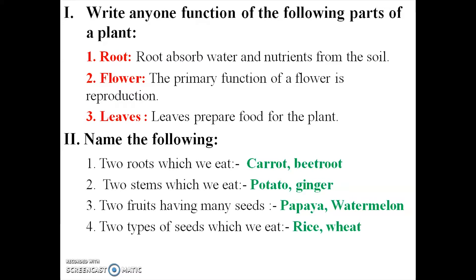Third one: two fruits having many seeds - papaya and watermelon. Spell the words: papaya - P-A-P-A-Y-A, watermelon - W-A-T-E-R-M-E-L-O-N. Fourth question: two types of seeds which we eat - rice and wheat, which are cereals and pulses.